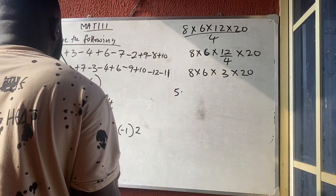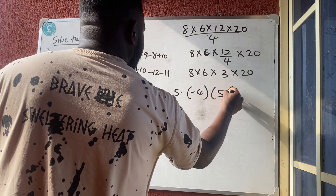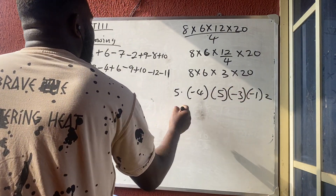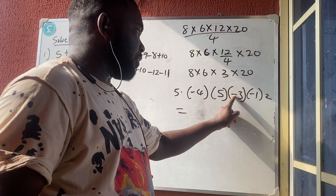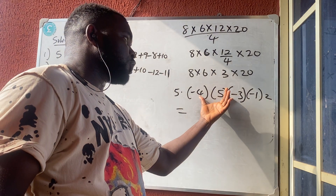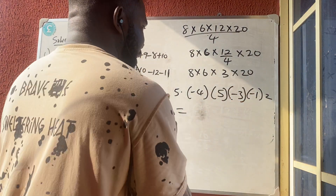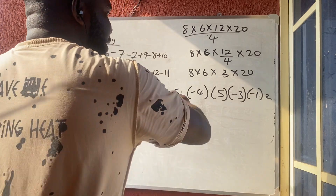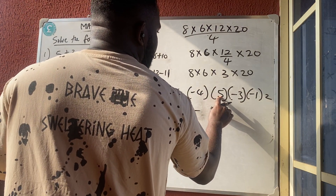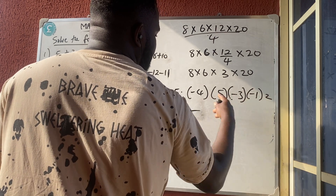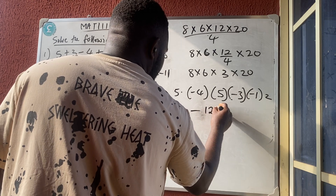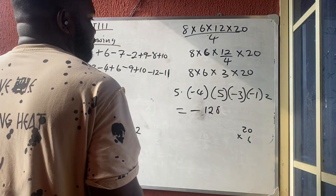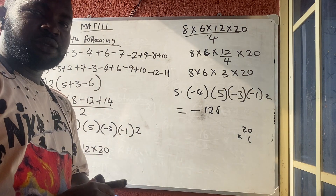Number 5: minus four, bracket five minus three minus one and two. In multiplication, check the sign first: minus times minus gives plus; but then plus times minus gives minus — so the overall answer is negative. Multiplying the numbers: four times five is twenty, and three times two is six... wait, let me recalculate: the result inside needs to be computed, and twenty times six gives 120. So the answer is negative 120.